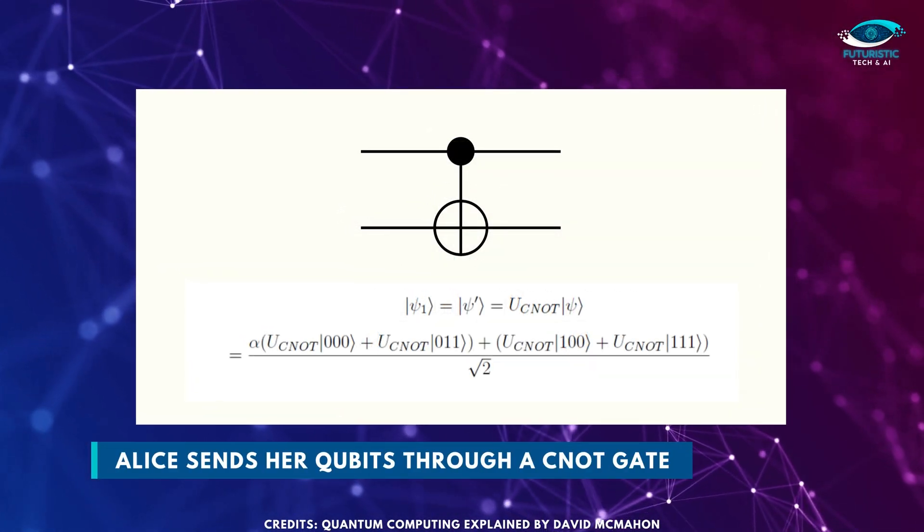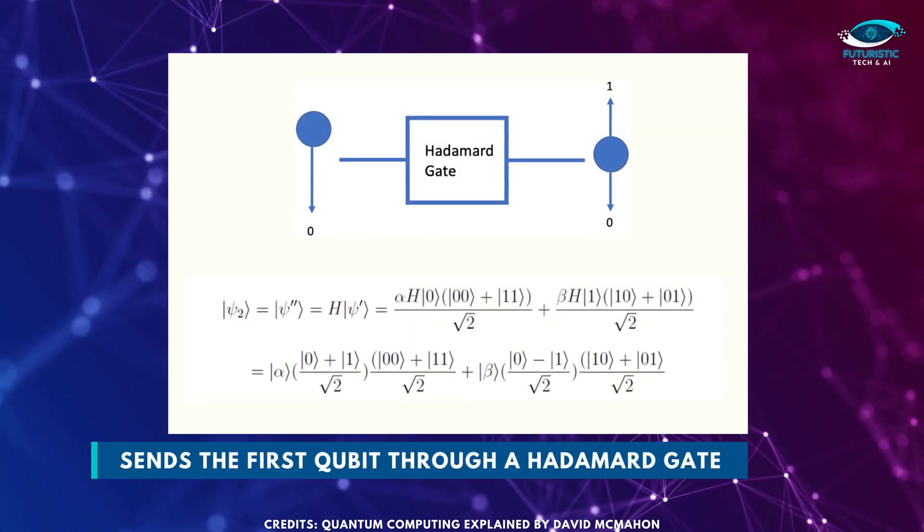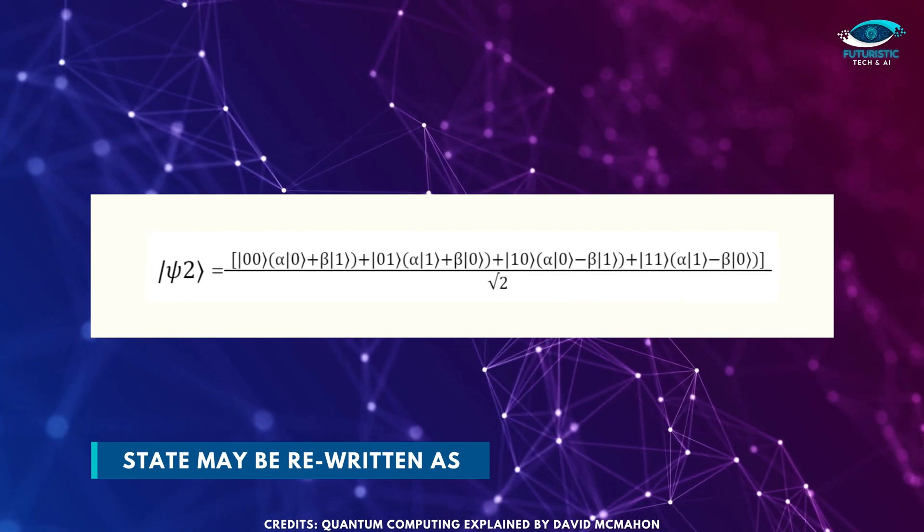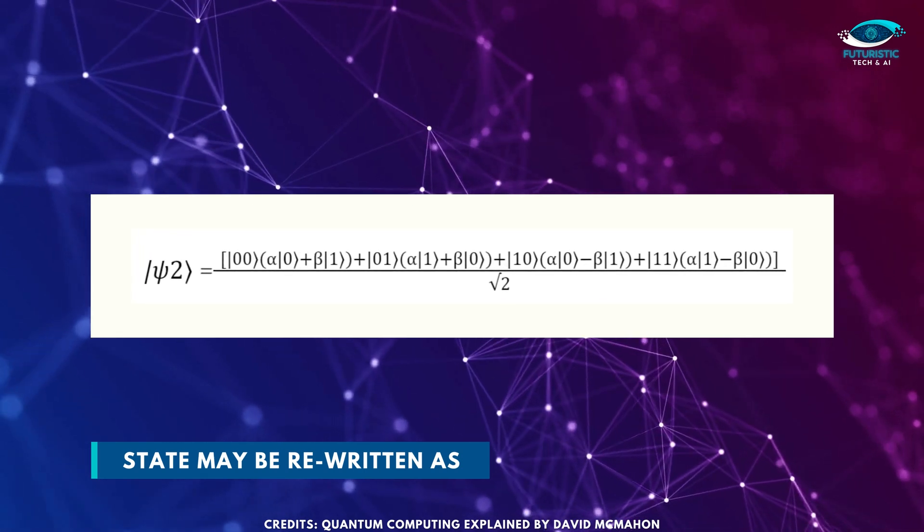Alice sends her qubits through a CNOT gate. She then sends the first qubit through a Hadamard gate. This state may be rewritten in the following way, simply by regrouping terms.